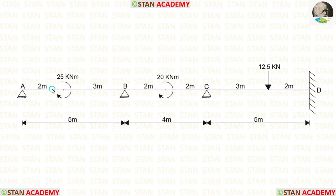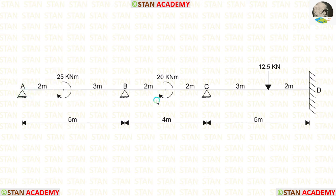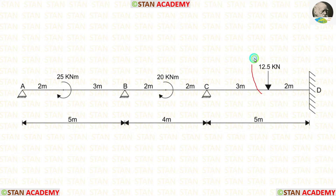In span AB, there is a concentrated moment of 25 kNm acting at 2 m from point A. In span BC, there is a concentrated moment of 20 kNm acting at the center. Both moments are acting in the clockwise direction. In span CD, there is a concentrated load of 12.5 kN acting at 3 m from point C.